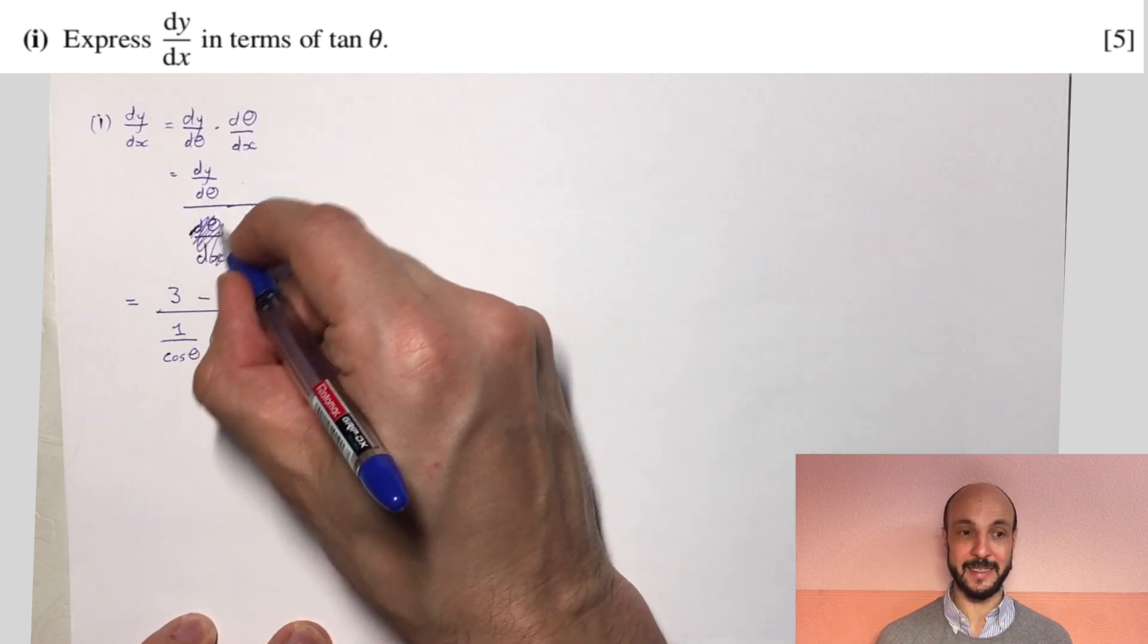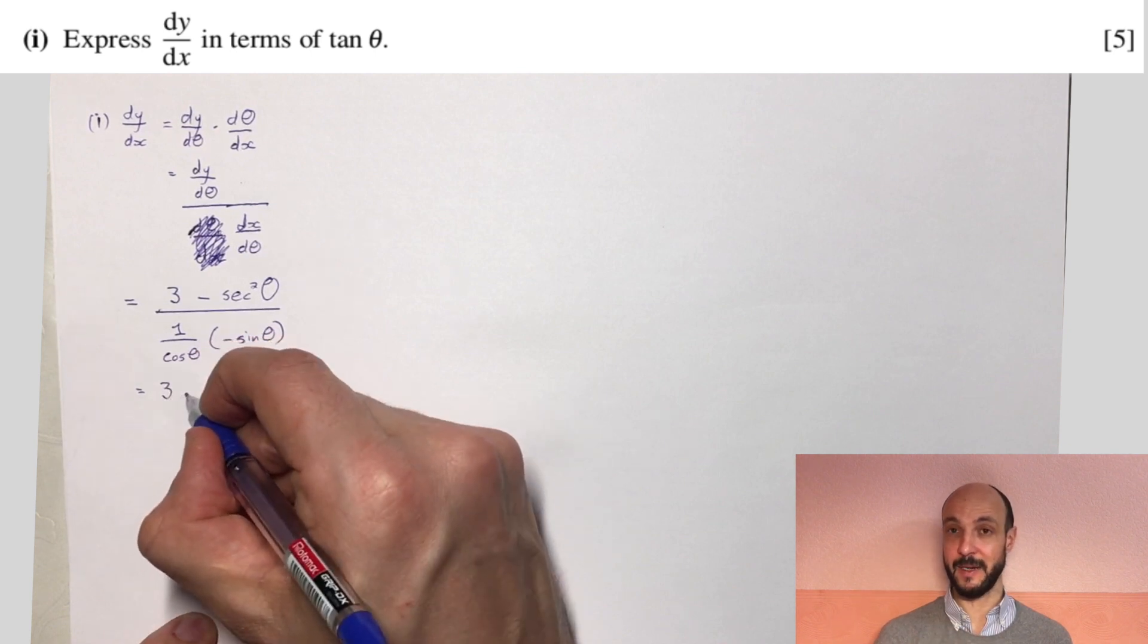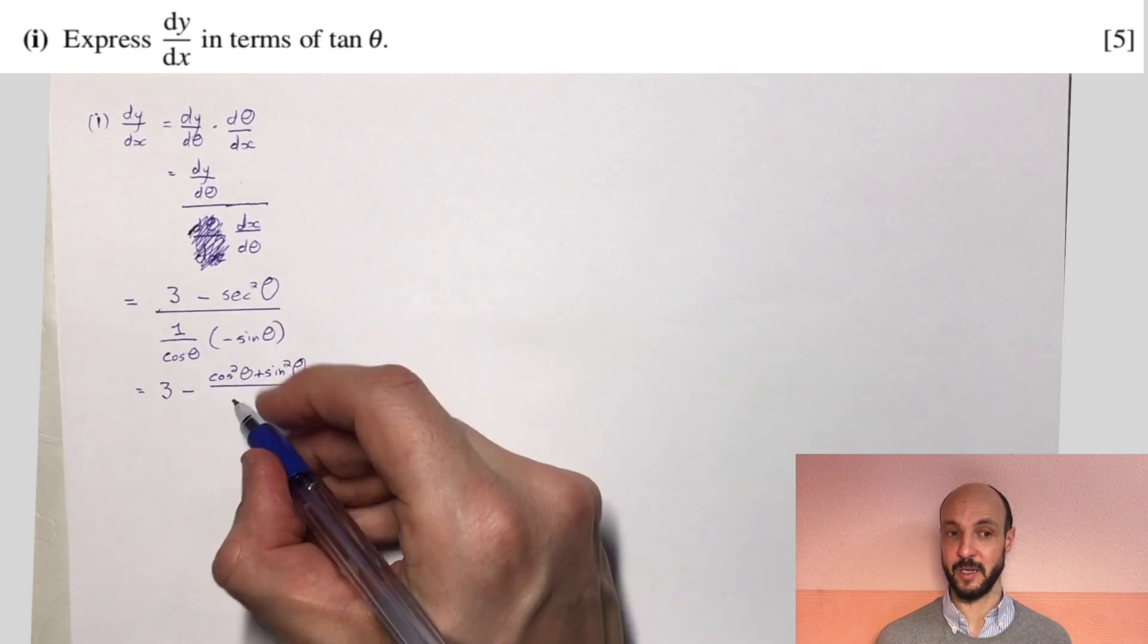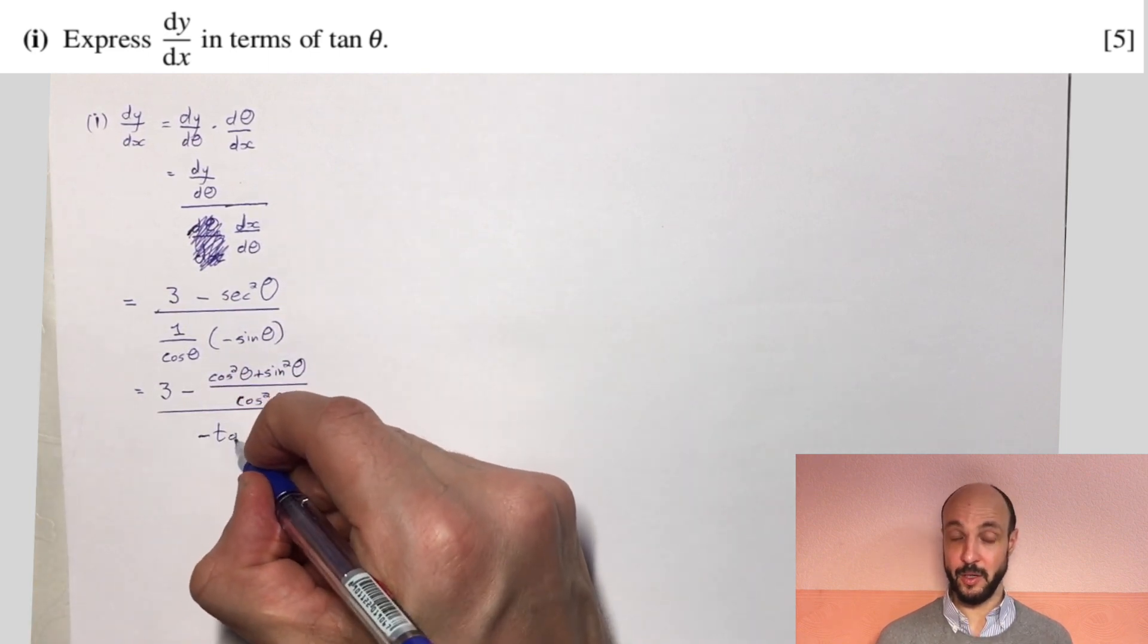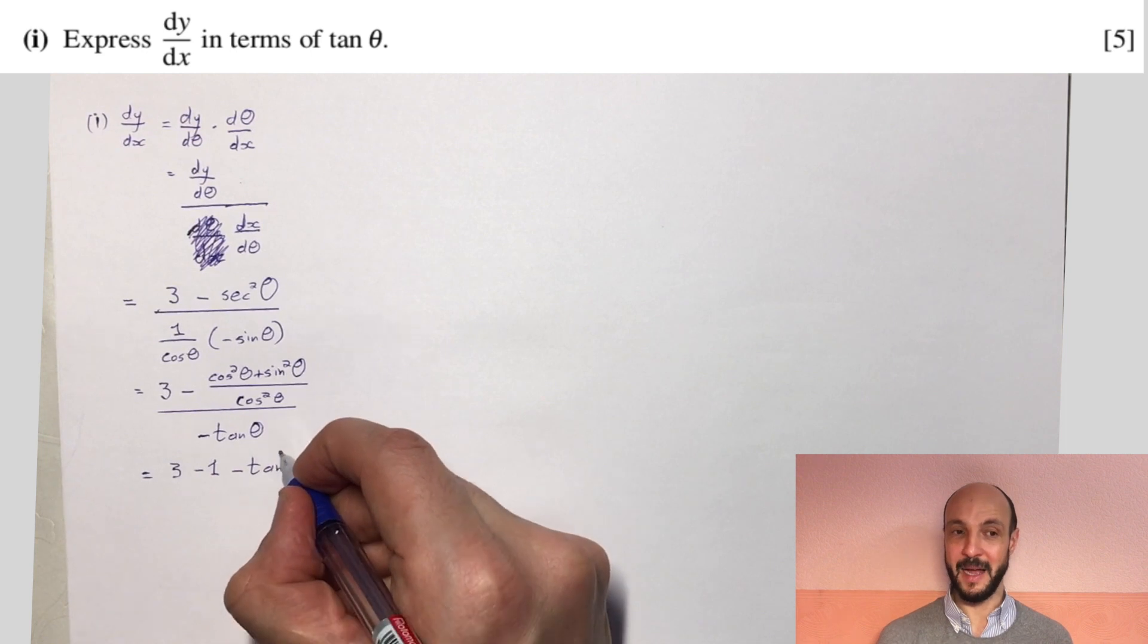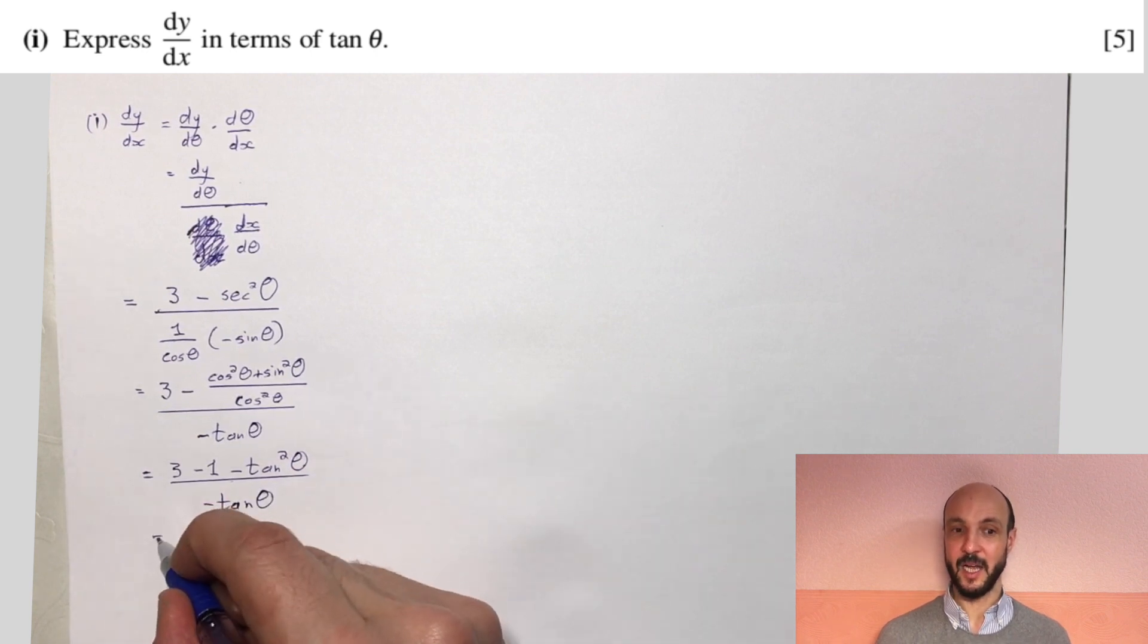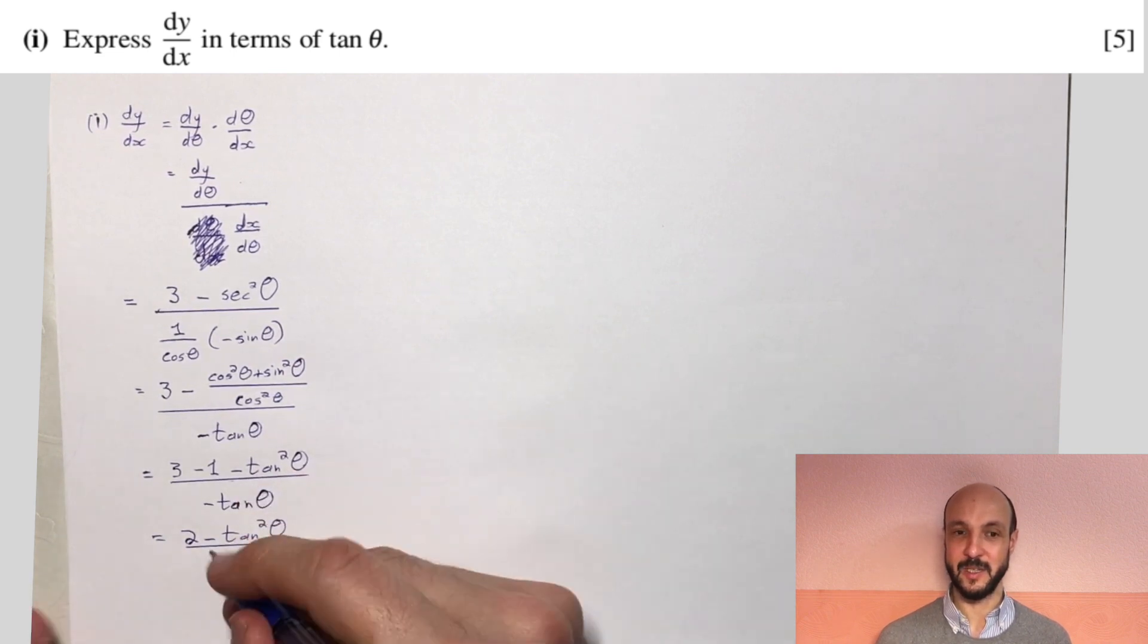So we're told that we need to express everything in terms of tan θ. Now, on our numerator, what we can do with our sec² θ, we can rewrite the 1 as cos² θ plus sin² θ. So we've got 3 minus (cos² θ plus sin² θ) over cos² θ. And then on the bottom, we've got minus sin θ over cos θ. That straightforwardly becomes minus tan θ. So then on the numerator, we've got 3 minus cos² θ over cos² θ is 1, and then minus sin² θ over cos² θ is tan² θ. So we've got 2 minus tan² θ over minus tan θ. So if we just neaten that up, that's (tan² θ - 2) over tan θ.